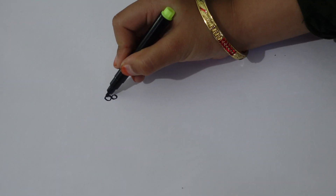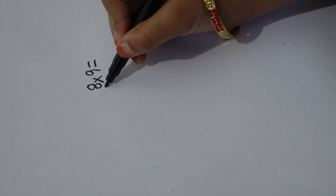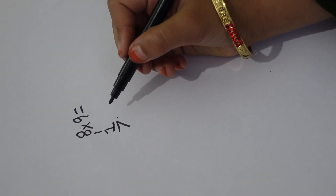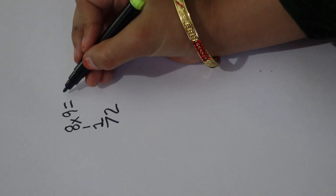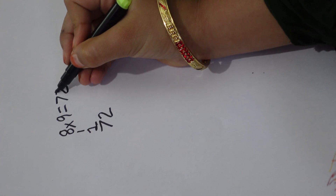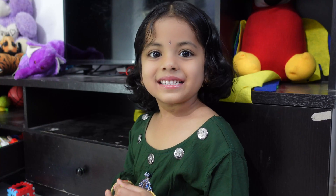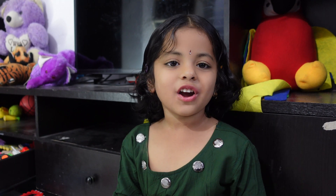Now let's calculate 8 nines — how much? 9 minus 7 is equal to 2, so the answer is 72. Second trick also done! Now we can write the 9 times table easily. Thank you all for watching. Please subscribe to my channel. See you in the next video. Bye!